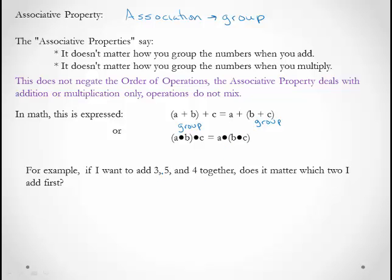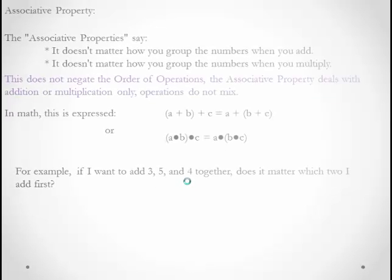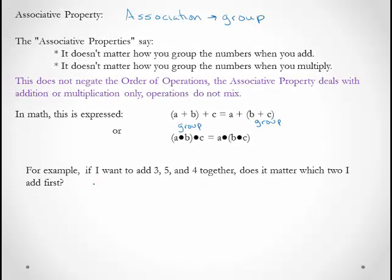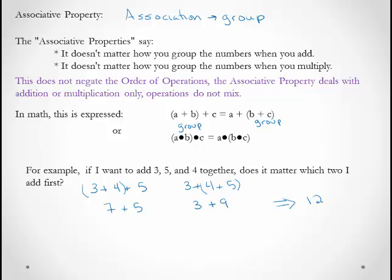So if I want to add 3, 5, and 4 together, does it matter which two I add first? Let's try it. If I have 3 + 4 + 5 and I add 3 and 4 together first, or 4 and 5 together first: this is 7 + 5, this is 3 + 9, and they both equal 12.